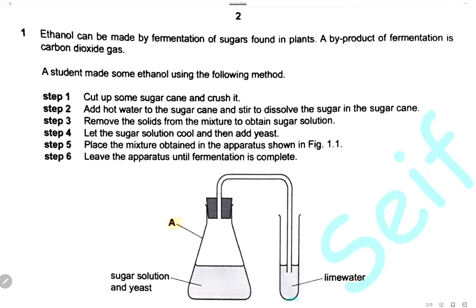Question 1. Ethanol can be made by fermentation of sugars found in plants. A byproduct of fermentation is carbon dioxide gas. The main product is ethanol and the byproduct is carbon dioxide. Here are the steps that the student made to form ethanol.